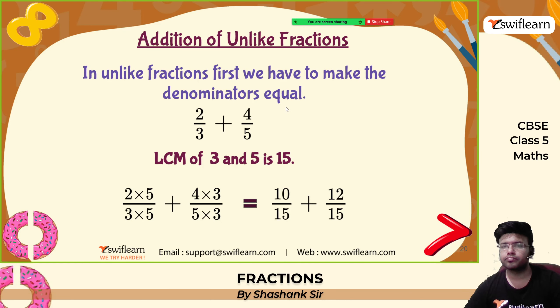Adding unlike fractions uses the same concept — if the denominators are not the same, make them the same. For example: 2 by 3 plus 4 by 5. Take the LCM of 3 and 5, which is 15. Make 2 by 3 into 10 by 15 by multiplying by 5, and 4 by 5 into 12 by 15 by multiplying by 3. Now the denominators are the same — add the numerators: 10 plus 12 is 22. The answer is 22 by 15, which cannot be simplified.